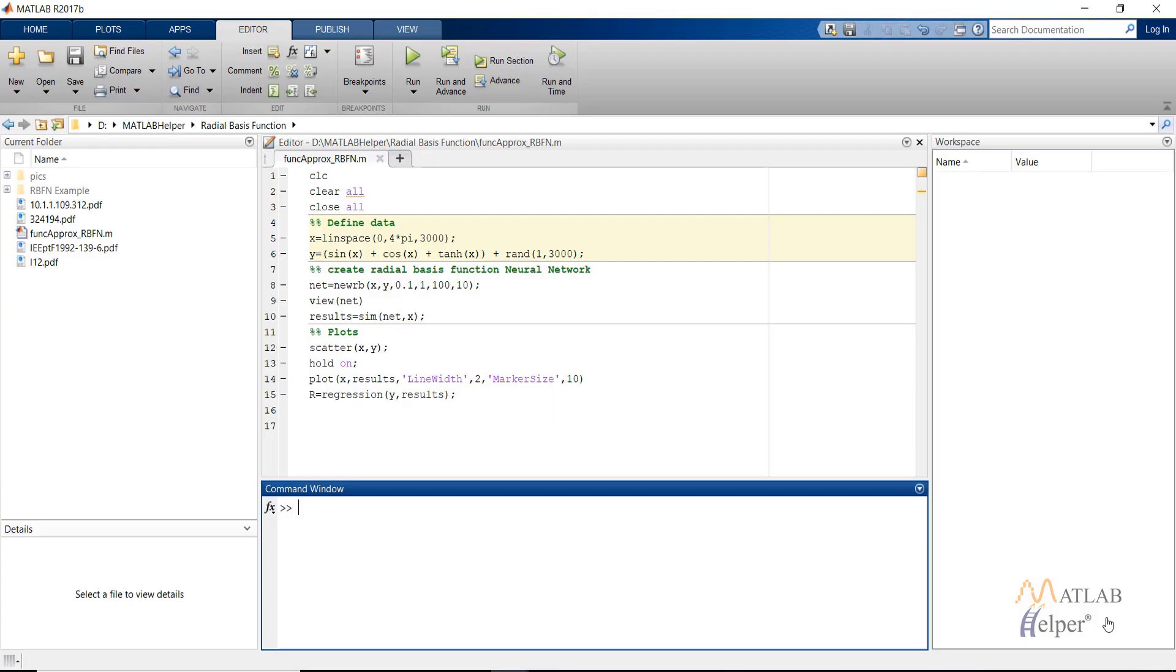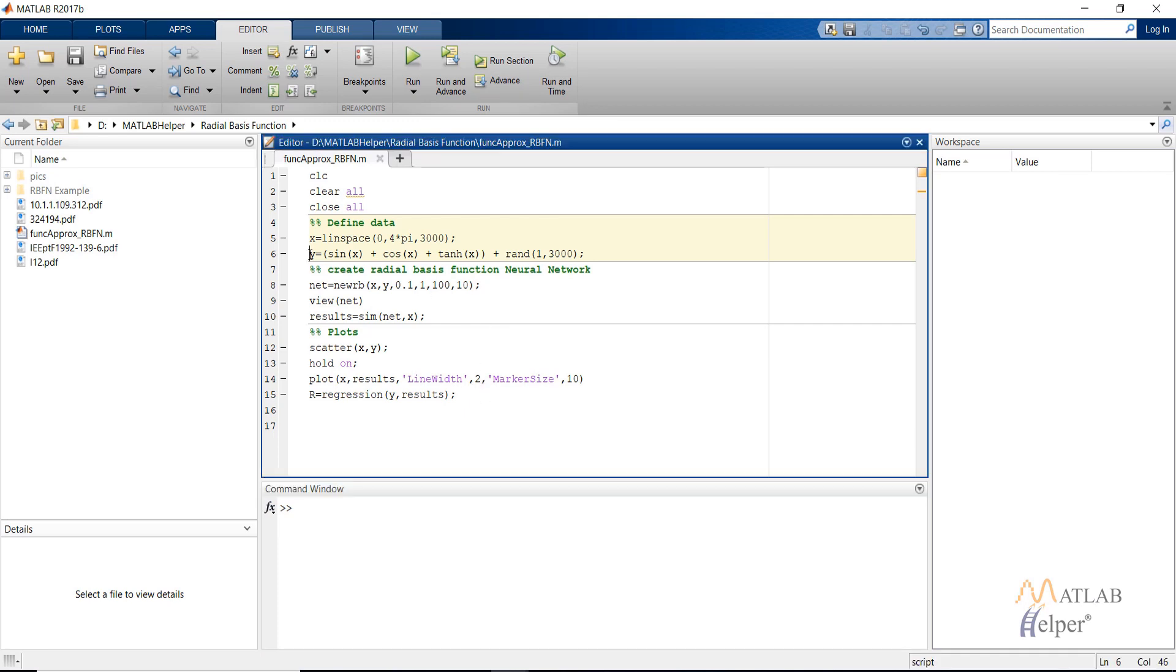Coming back to MATLAB, this is a small code that I have written for approximating a function. This is any random function Y and we supply it with equally spaced inputs of 3000 points and obtain the corresponding outputs. We add a random noise to it.